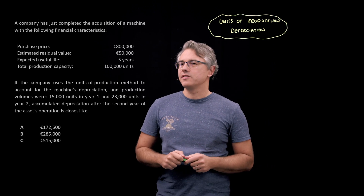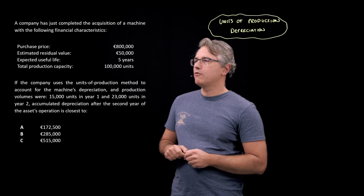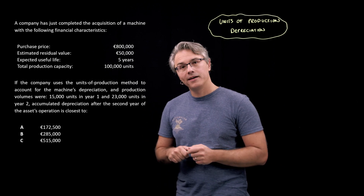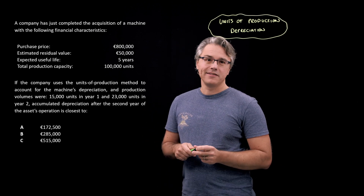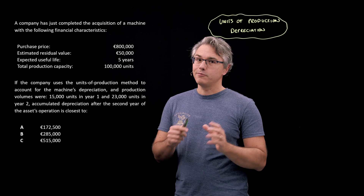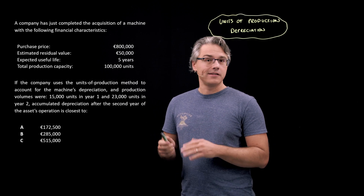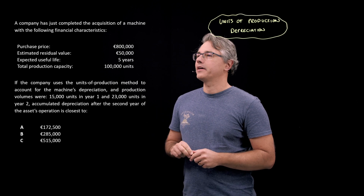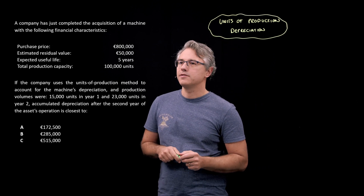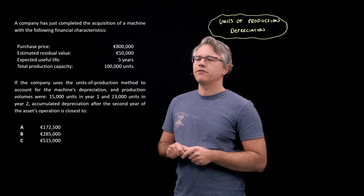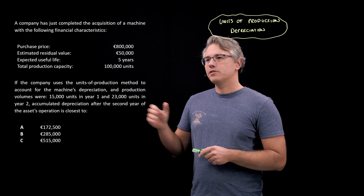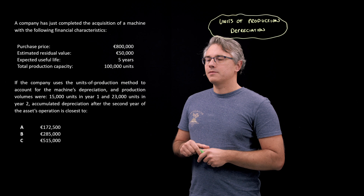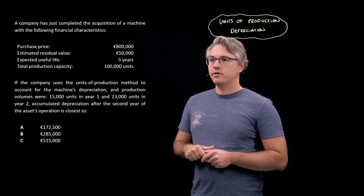This is the question I want us to have a go at. It's a company scenario which I already displayed on a previous question relating to straight line depreciation — if you watched that one, fine; if you didn't, you'll still be able to follow along. A company has just completed the acquisition of a machine with the following financial characteristics: purchase price, estimated residual value, expected useful life, and total production capacity.